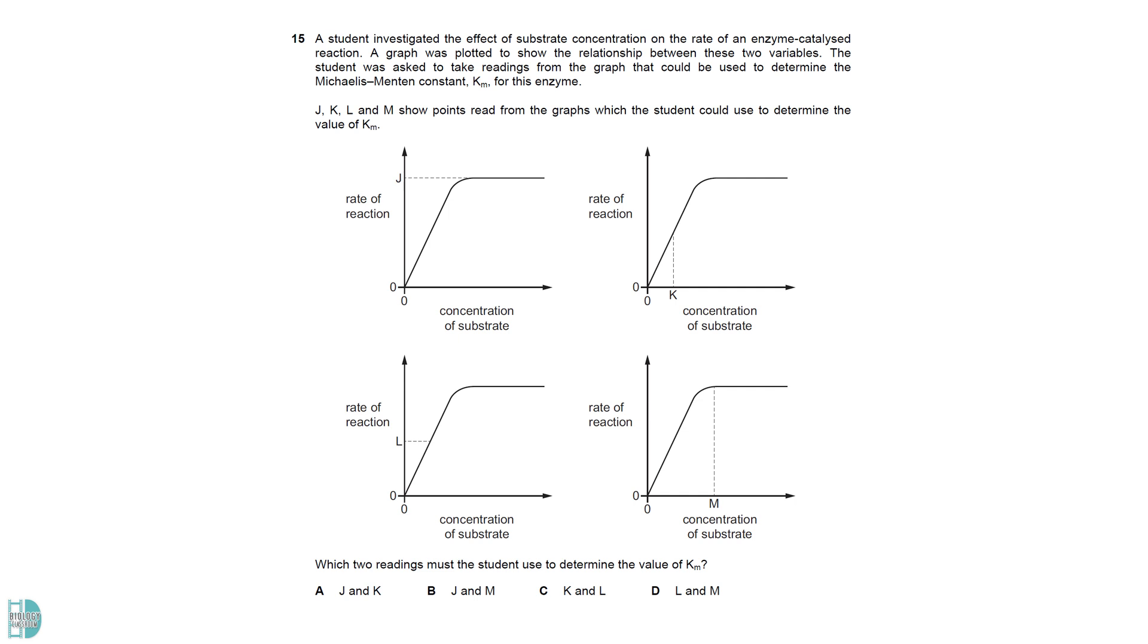To find the Km, we need to determine the half of Vmax, which is L. Then, interpolate using the point and project the line to the x-axis. This will show us the concentration of substrate that gives half Vmax. It is Km and is represented by K.